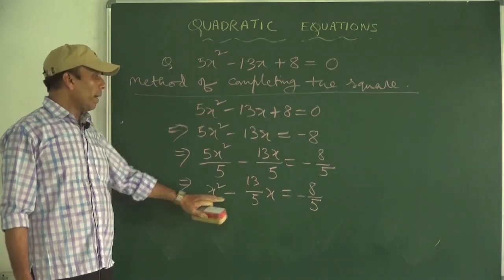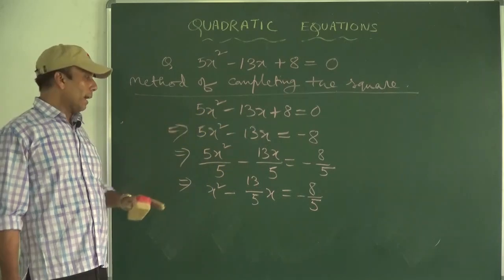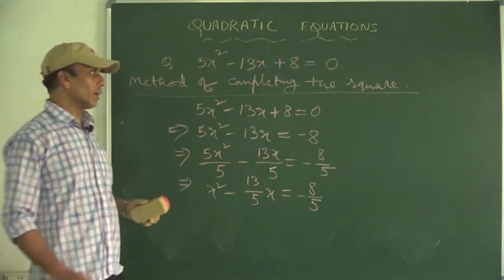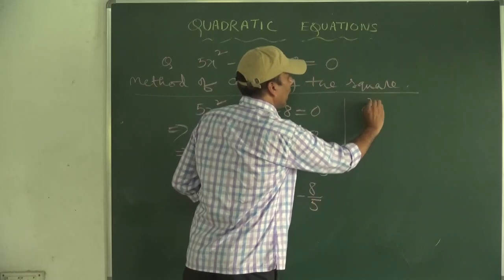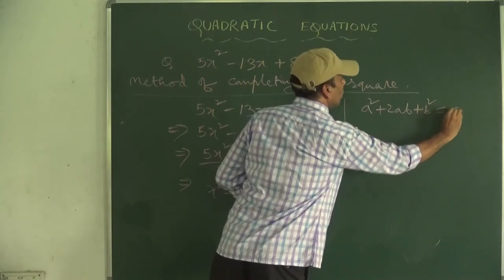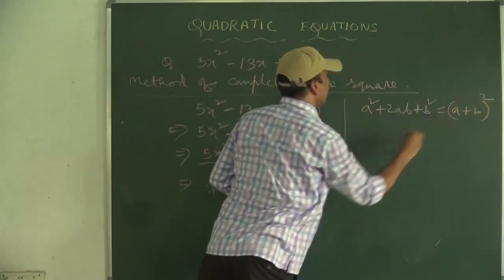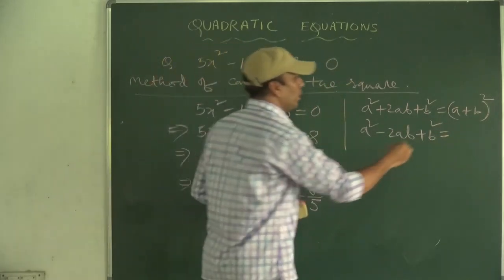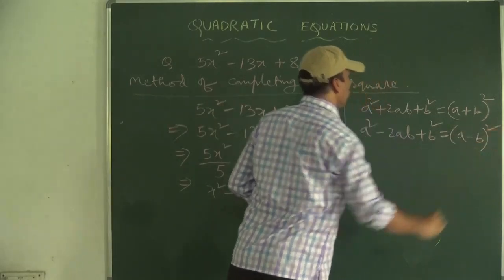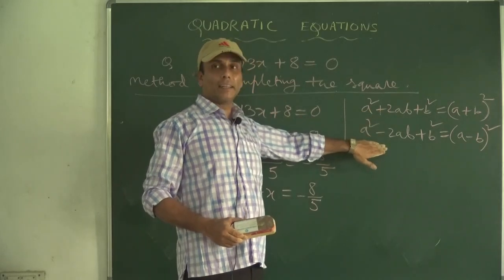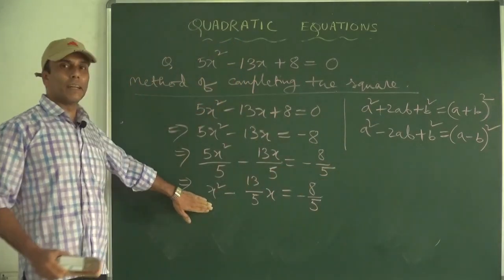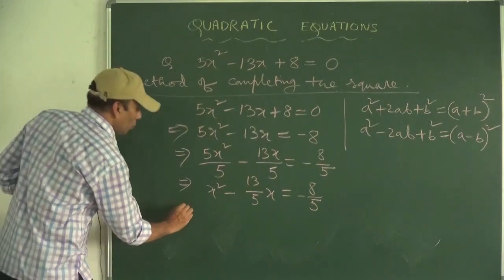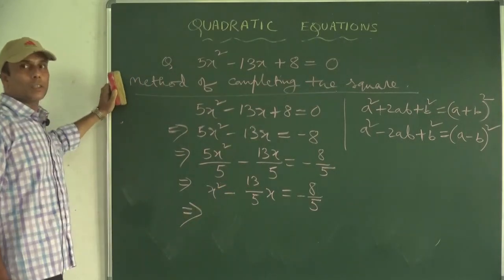Next, we divide all terms by the coefficient of x², which is 5. This gives x² - (13/5)x = -8/5. Then we try to make the left hand side in the form of (a - b)², that is a² - 2ab + b².